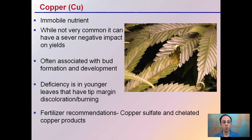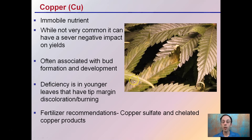Copper is an immobile nutrient and while not very common, it can have severe negative impact on yields. It's often associated with bud formation and development. Deficiencies appear in younger leaves at the tip or margin as discoloration — we see the tip of this leaf curling up and looking brownish, which is characteristic of copper deficiency. Copper sulfate or chelated copper products are advised, but if spraying on leaves be careful as it can cause a greater chance of leaf burn.